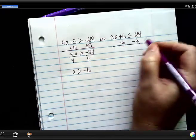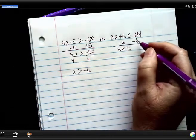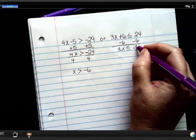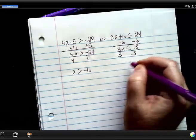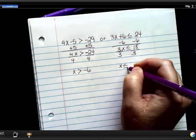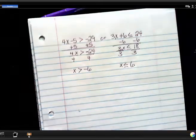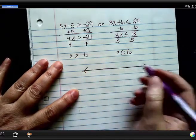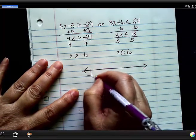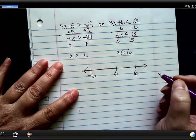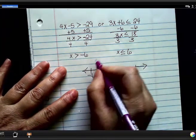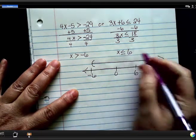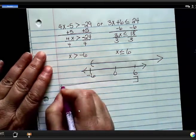Subtract 6 from both sides. 3x is less than or equal to 6. So let me show you what this looks like on a graph. So I've got negative 6, 0, positive 6. Negative 6 is a parenthesis going all this way. And this is a bracket going all this way.